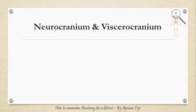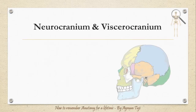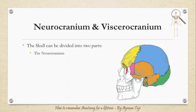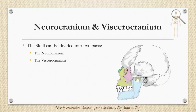Hello again, and let's start with the skull. The skull can be divided into two parts: the neurocranium or brain case, which forms the protective cavity surrounding the brain and brainstem, and the viscerocranium, which is formed by the bones supporting the face.